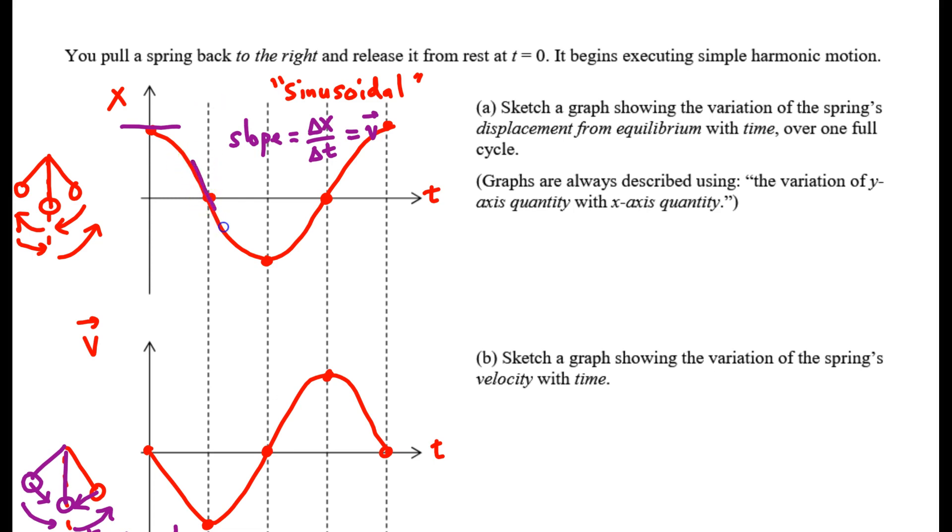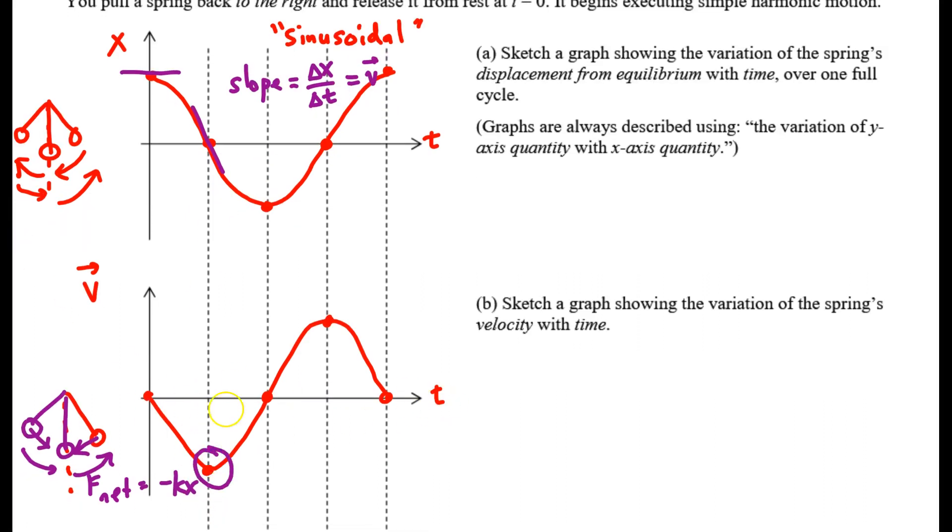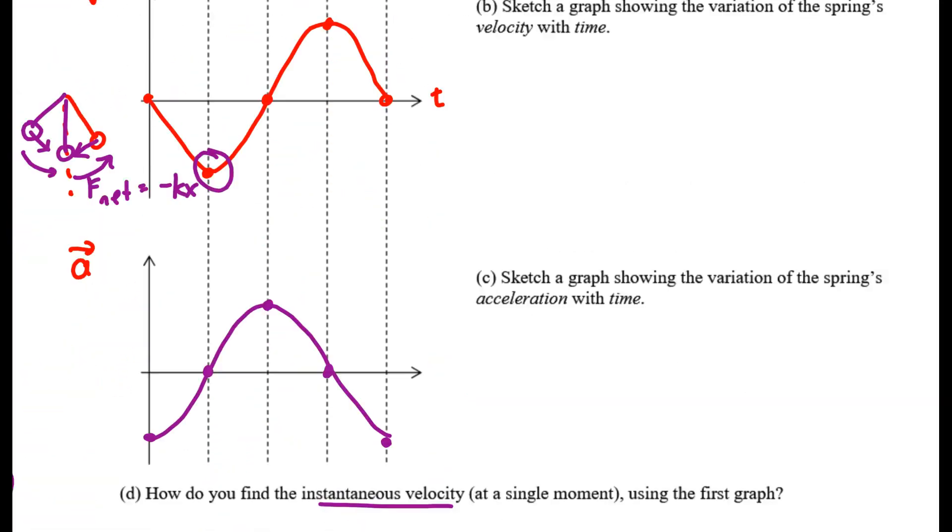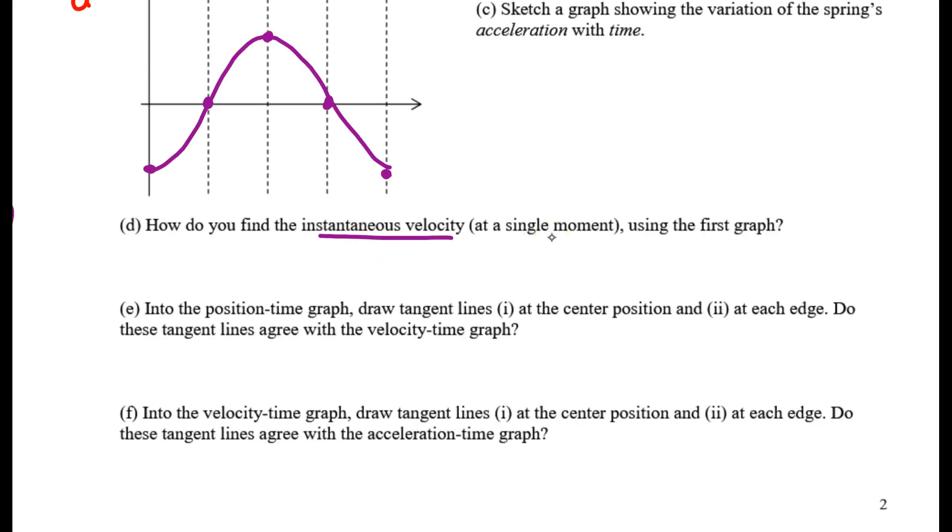So the tangents can tell us the instantaneous slope. If you look right here, this is where you're going fastest because a little bit later, you start to curve back up again. This is the steepest line, the biggest slope. And look at that—it's the largest speed. We're the farthest from the x-axis where v is zero. So what have we learned? You can find instantaneous velocity on the first graph using the slope of the tangent line.